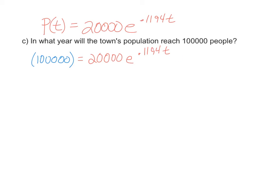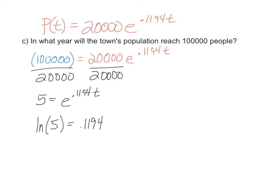This will be solved similarly to the first part of this exercise. We'll divide by 20,000, and that gives us 5 equals e to the 0.1194 times t power. We'll switch it over to logarithmic form, making sure we use natural log because our base is e. This results in the natural log of 5 equals 0.1194t.